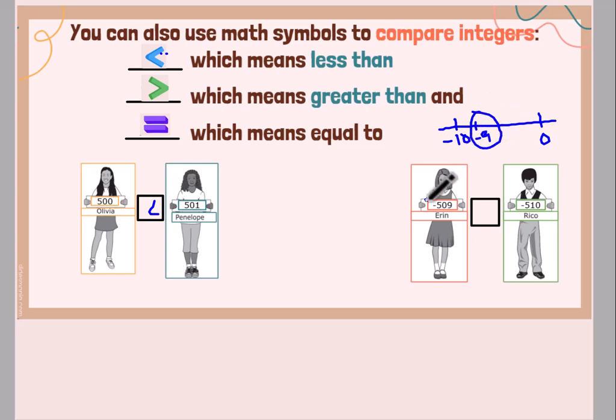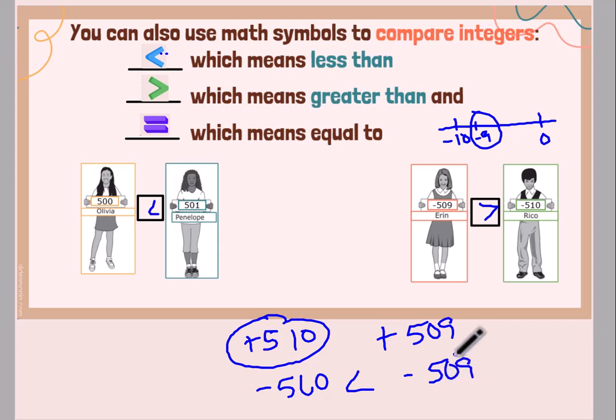So negative 501 would be greater than negative 510. Another way that I like to think about it that's sometimes easier than having to draw a number line or visualize a number line is to remember that negative means the opposite. If I had a positive 510 and a positive 509, which one would be larger? The 510, right? So instead of 510 being the largest, negative 510 would be the smallest, right? And negative 509 would be the largest. So that's another way to think of it as well.